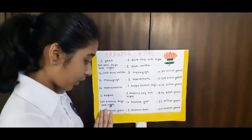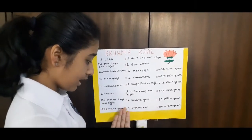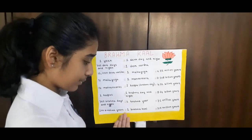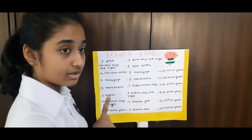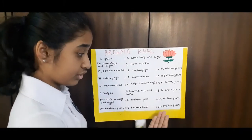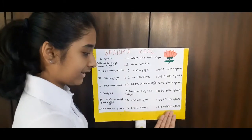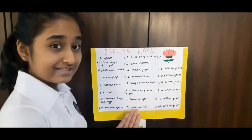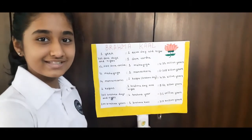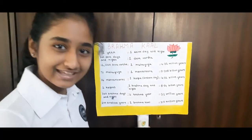Finally, 100 Brahma years should pass to form 1 Brahma Kaal, which is 310 trillion years. Isn't this mesmerizing? Thank you!